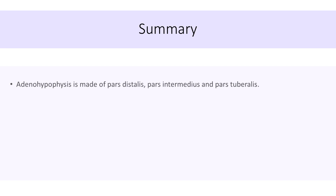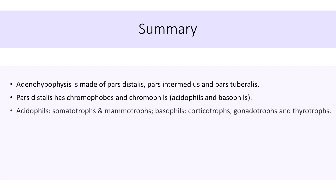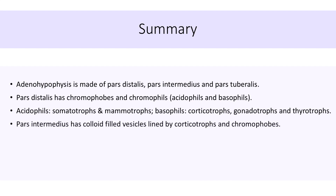To quickly recollect: adenohypophysis is made up of pars distalis, pars intermedius, and pars tuberalis. Pars distalis has chromophobes and chromophils; chromophils are of two types, acidophils and basophils. Acidophils include somatotrophs and mammotrophs, while basophils include corticotrophs, gonadotrophs, and thyrotrophs. Pars intermedius has colloid-filled vesicles lined by basophilic cells, likely corticotrophs, and chromophobe cells.